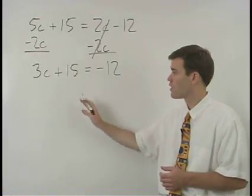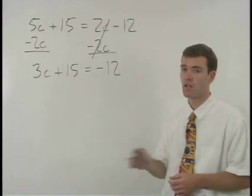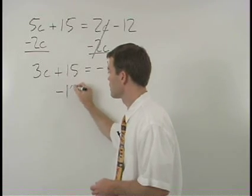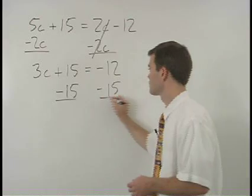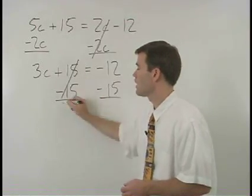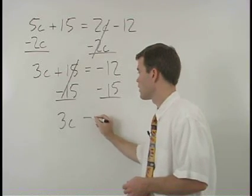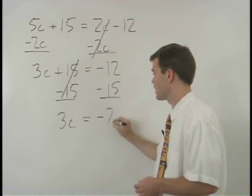Now we want to put our numbers together on the right side of the equation and we do that by subtracting 15 from both sides. On the left we have 3c and on the right negative 12 minus 15 is negative 27.